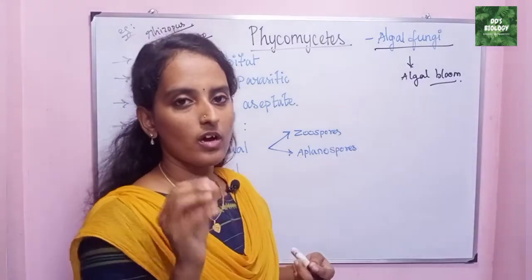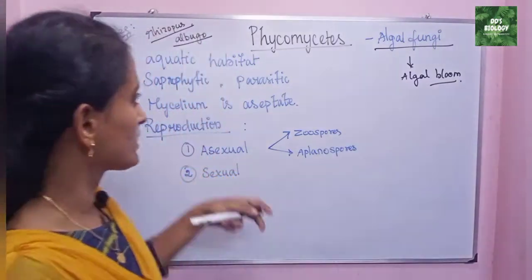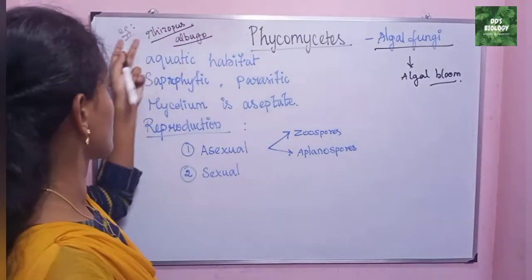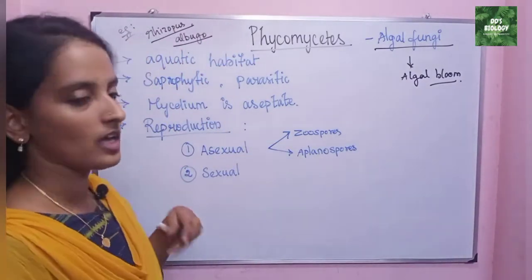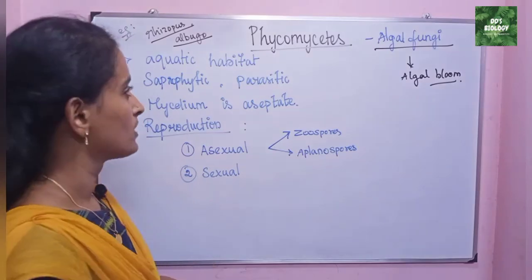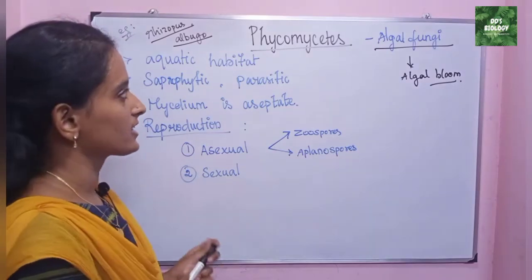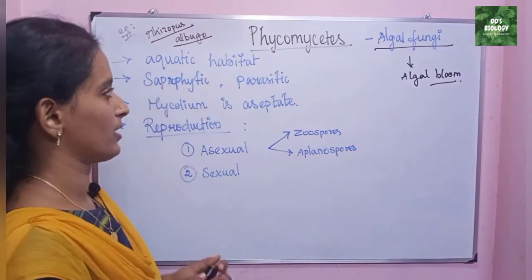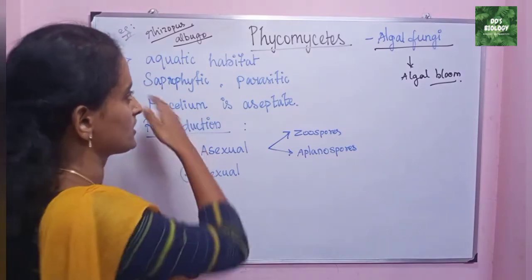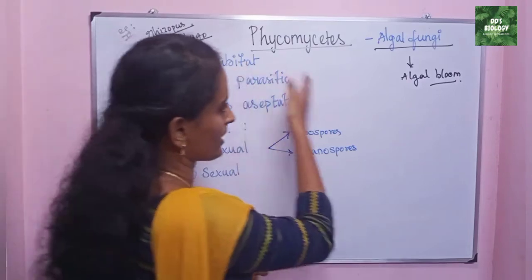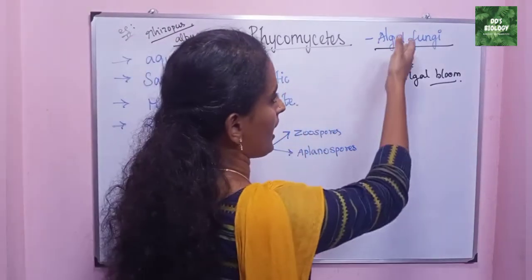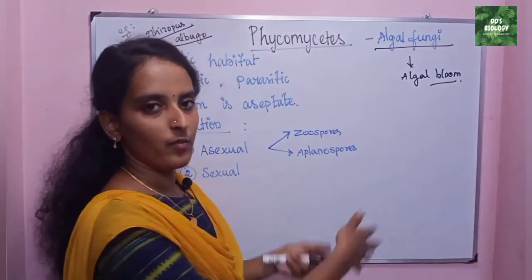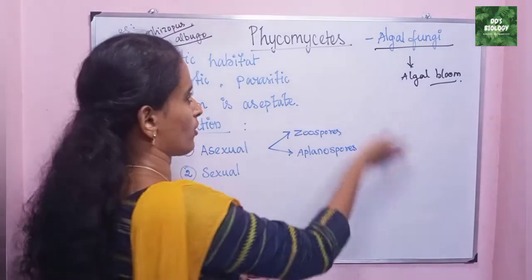Phycomycetes example: Rhizopus, Albugo. If you look at the characters, it has an aquatic habitat — that means algal bloom in aquatic areas and water bodies.